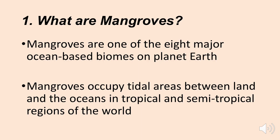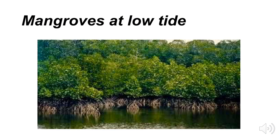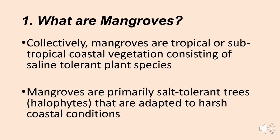We consider mangroves one of the eight major ocean-based biomes on our planet. Mangroves typically occupy tidal areas between the land and the oceans in both tropical and semi-tropical regions of the world. When we move out of semi-tropical regions, it's not warm enough for mangrove-type plants, so we only really see them in the tropics and the subtropics. Here's a picture of a mangrove forest at low tide where you can see the plant roots, very characteristic of a mangrove swamp.